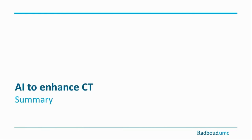To summarize, deep learning has helped us do many things. In image reconstruction, it reduces image noise, improves image sharpness, keeps artifacts at a low rate, and is fast. Thin-section deep learning reconstructions are just as good as thick-section hybrid reconstructions, allowing us to look at much more detail in our scans. Further developments will include reconstruction of undersampled scans, dual energy applications, and a wide field of image evaluation and workflow improvement. Thank you for your attention.